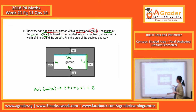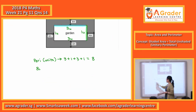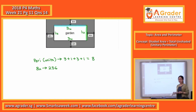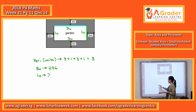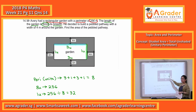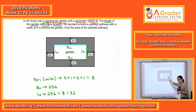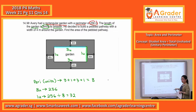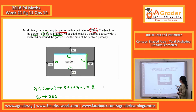Eight units equals 256m. So we can find one unit, which is 32m. The breadth of the garden is 32m.